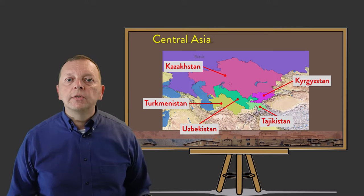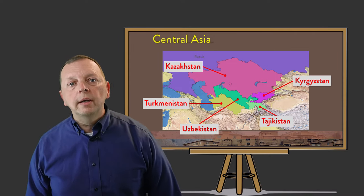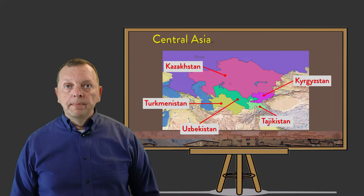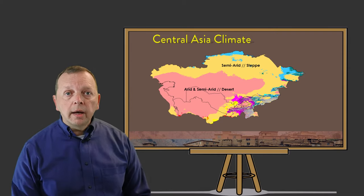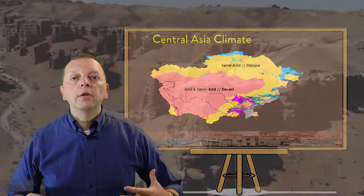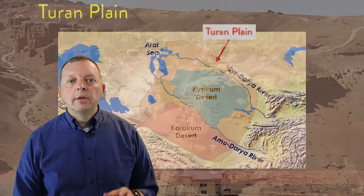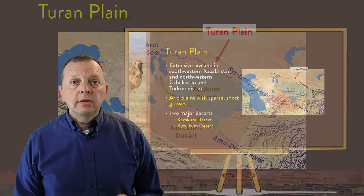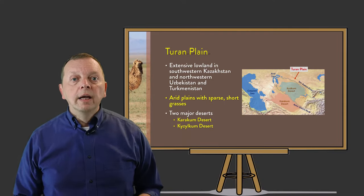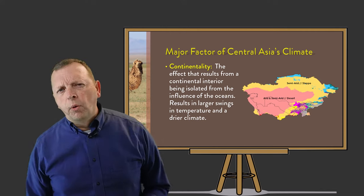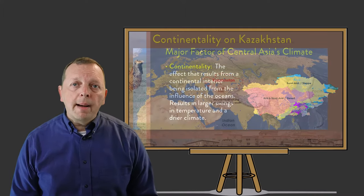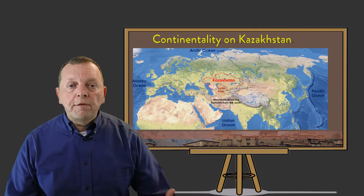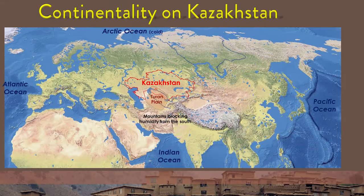Our final region of the former republics is Central Asia, which includes Kazakhstan, Turkmenistan, Uzbekistan, Tajikistan, and Kyrgyzstan. Dominating most of Kazakhstan is a grassland steppe. However, in the southwestern portion of Kazakhstan and northwestern Uzbekistan and Turkmenistan, we find the Turan Plain, which is made up of two deserts: the Karakum Desert and the Kyzylkum Desert. These steppes and deserts of Central Asia are largely caused by continentality — the effect of areas being far from the humidity of the seas. Kazakhstan and the rest of Central Asia are far from the Atlantic and Pacific Oceans, and the humidity from the Indian Ocean is largely blocked by the mountain ranges found to the south.